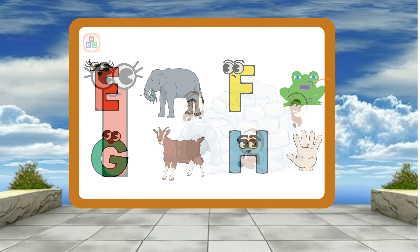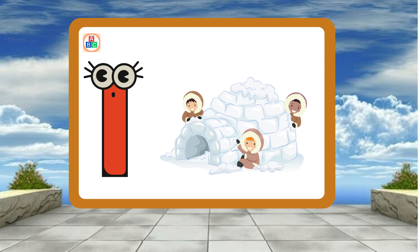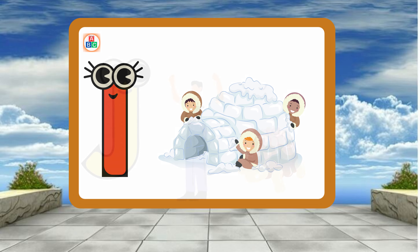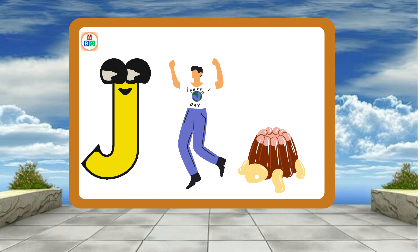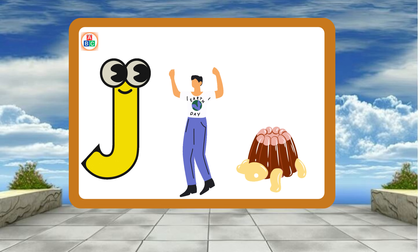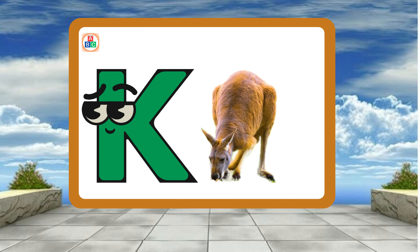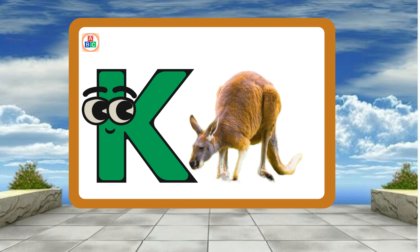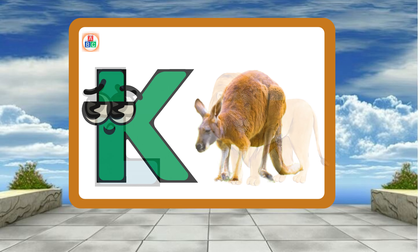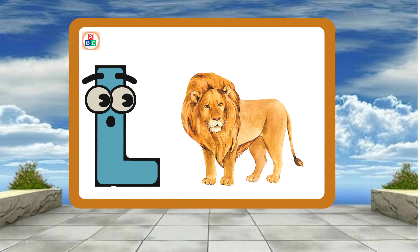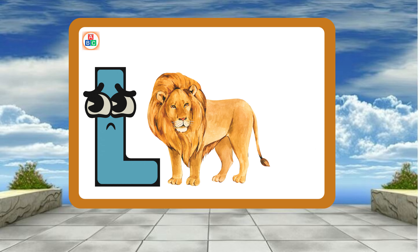I is for Igloo. I-I-Igloo. J is for Jump. J-J-Jump. K is for Kangaroo. K-K-Kangaroo. L is for Lion. L-L-Lion.